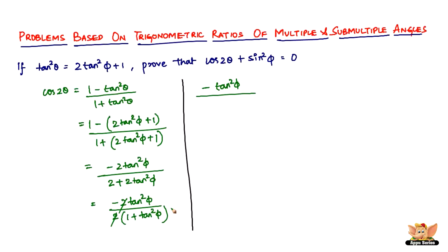Now 1 + tan²θ is nothing but sec²θ. So 1 + tan²φ will be sec²φ. This is nothing but -tan²φ, minus tan²φ is sin²φ divided by cos²φ.